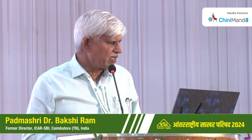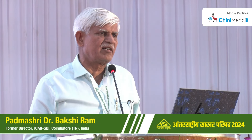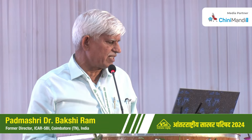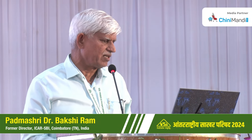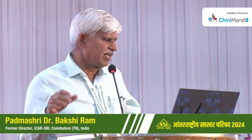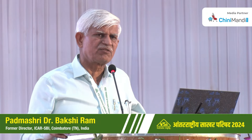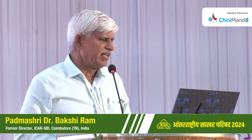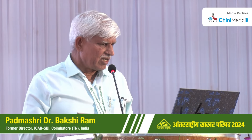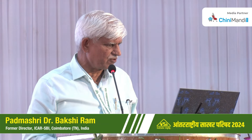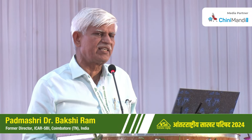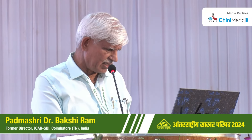In UP, the major beneficiary of this variety, with the increasing area from 3% during 2013-14 to 86.7% during 2021, both yield and sugar recovery improved. More than 2.5% sugar recovery improvement, and yield also increased to more than 23 tons per hectare for UP state. However, with the incidence of red rot, recovery is showing a declining trend in the UP state now.